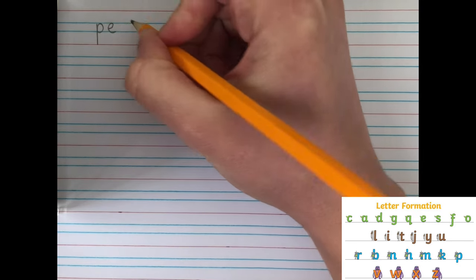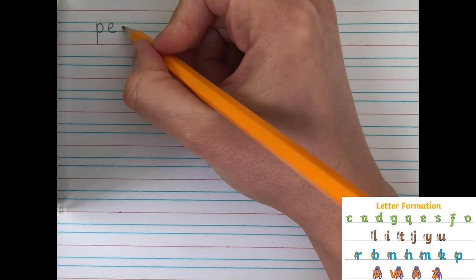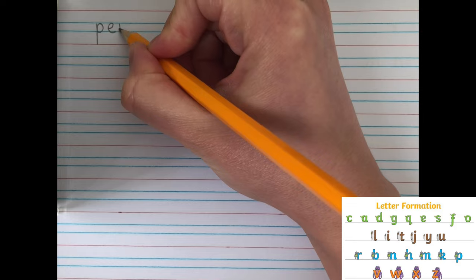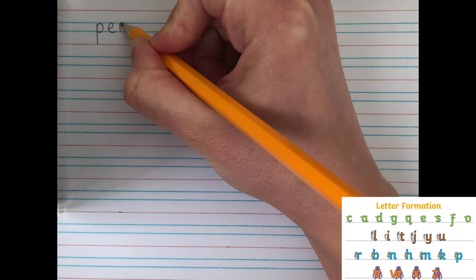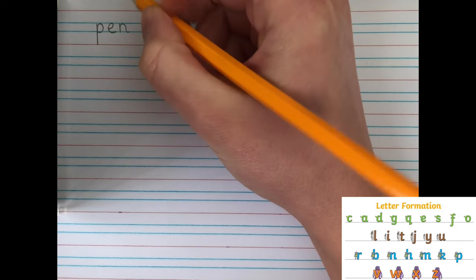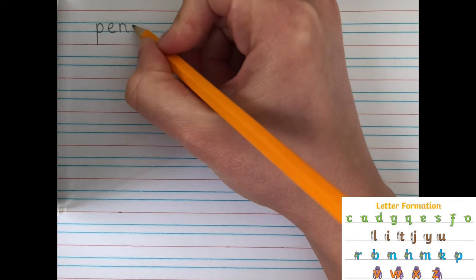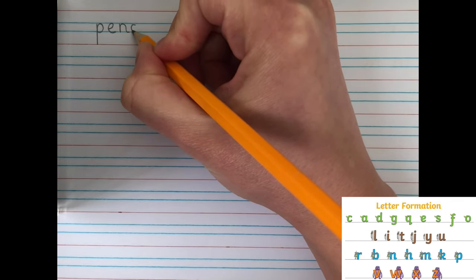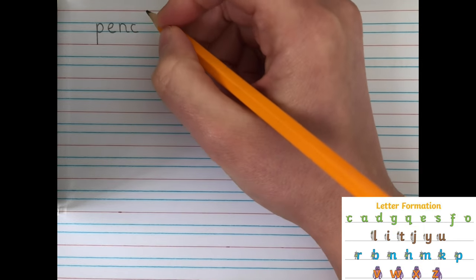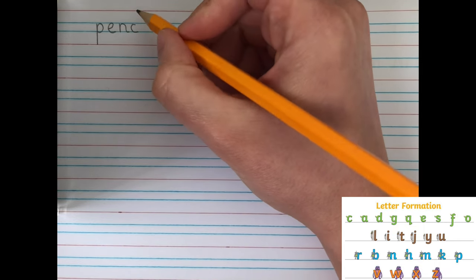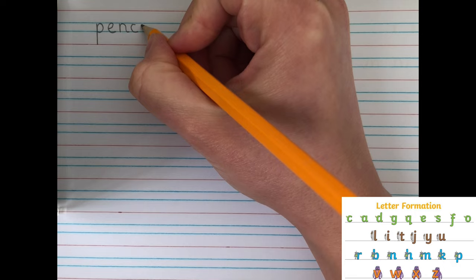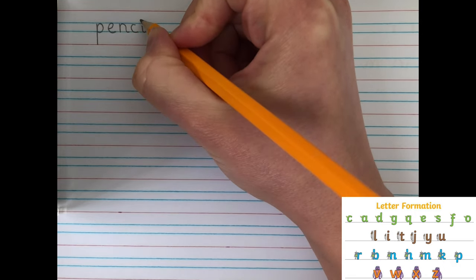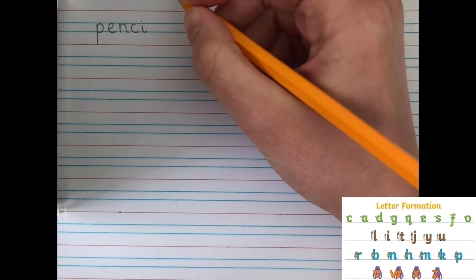E, then N, we have another one-armed robot, so start here, go down and back up and around. Now, another curly caterpillar for C, again, put it in between those blue lines. Now, a ladder letter, an I, so we start at the top and go down. Don't forget your dot on your I as well.